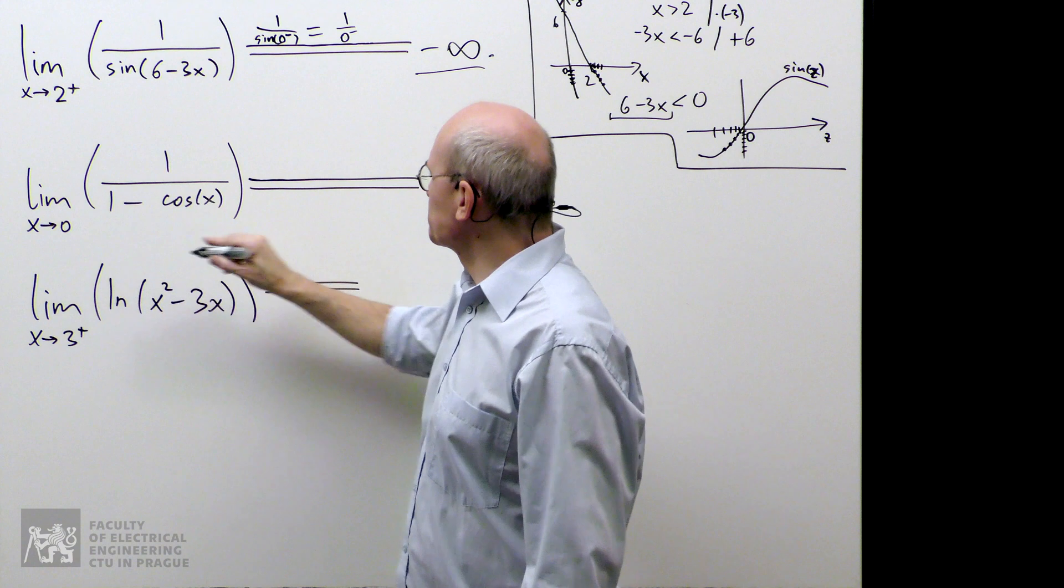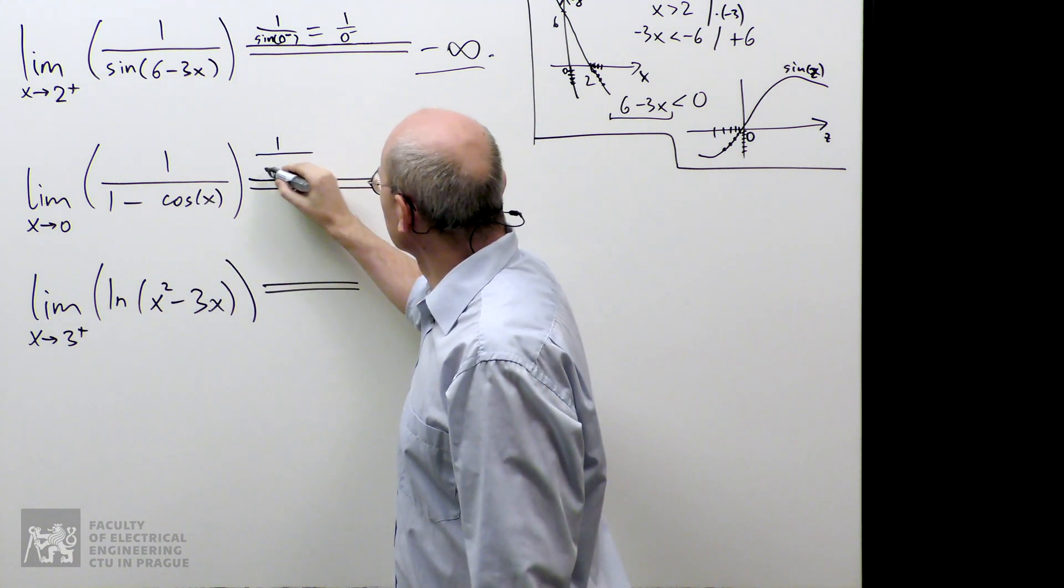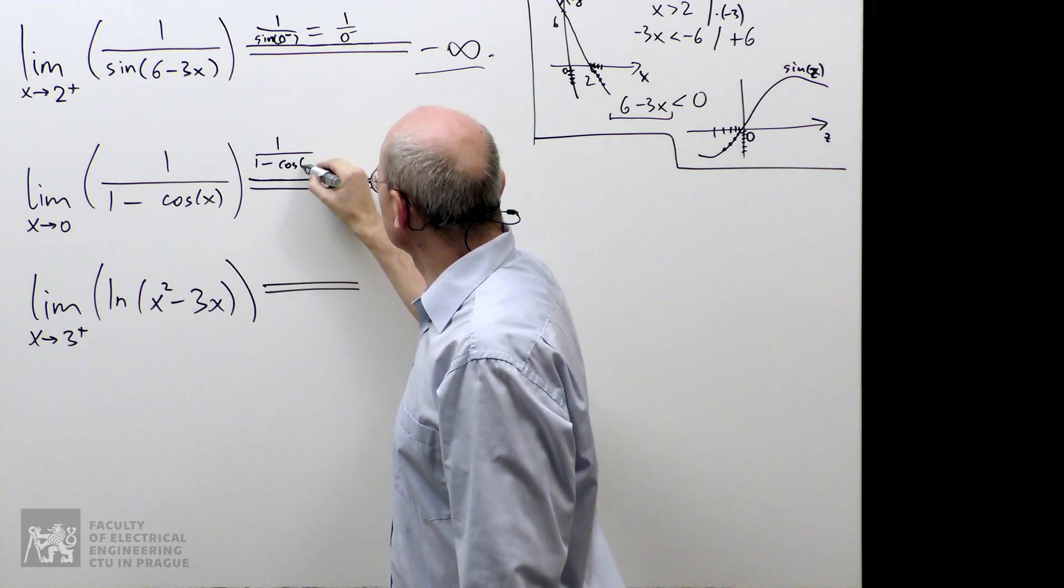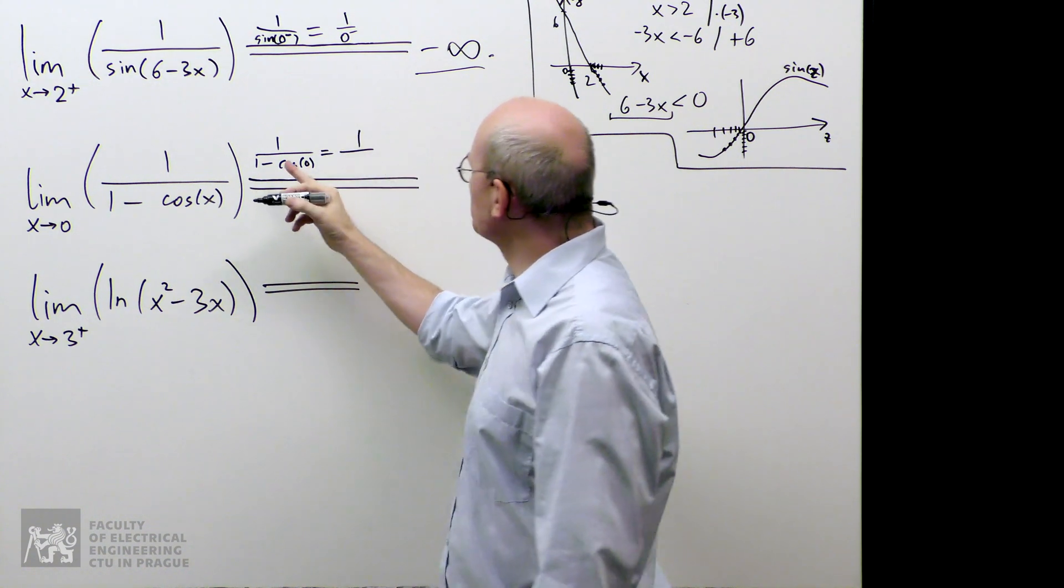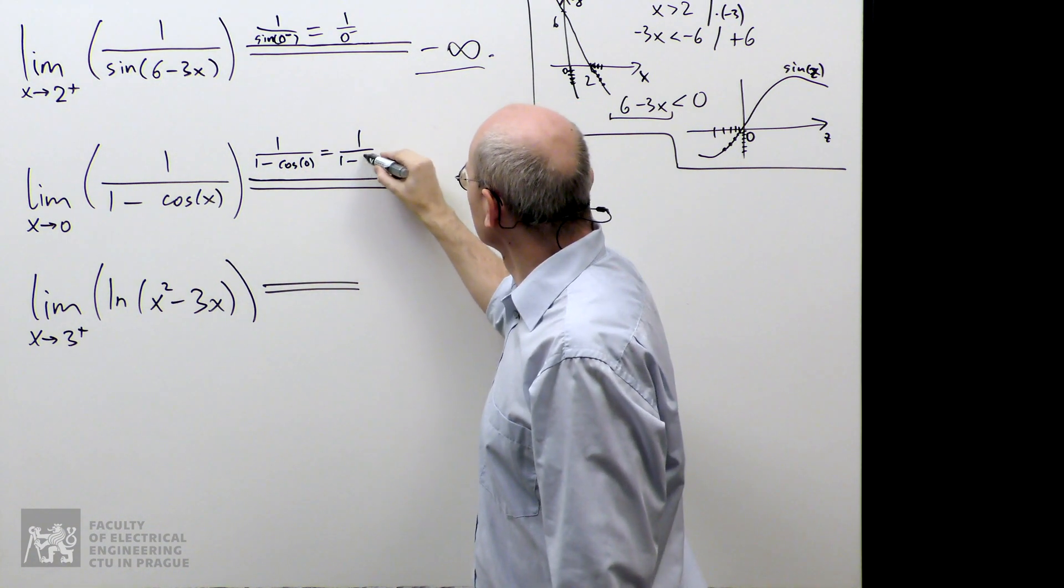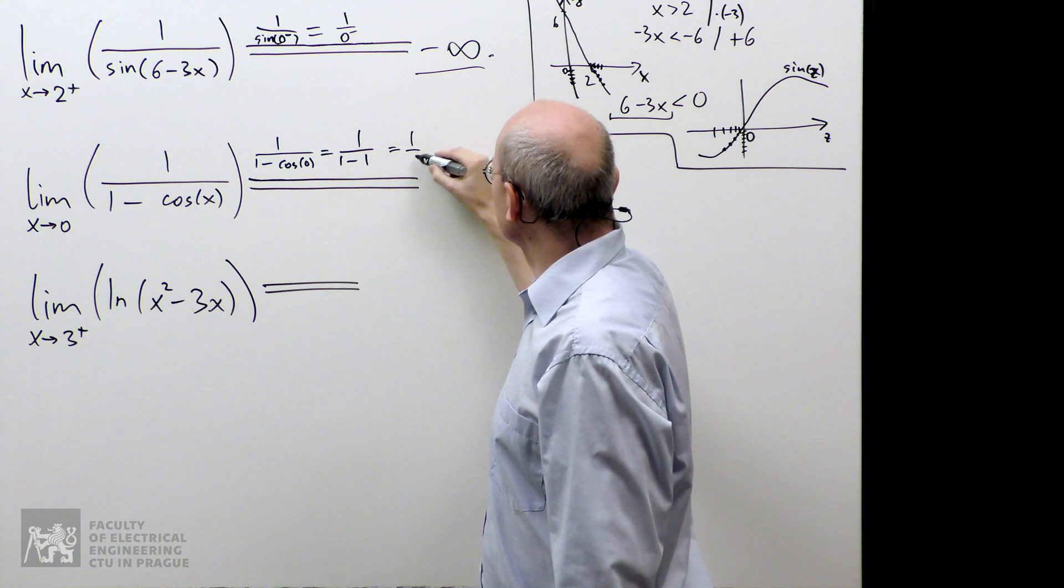So let's have a look at the second example. We take 0 and we substitute 1 over 1 minus cosine at 0. Now, cosine at 0 is just 1, and 1 minus 1 is 0.